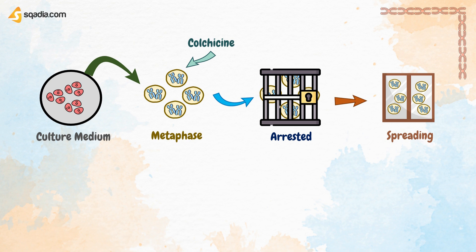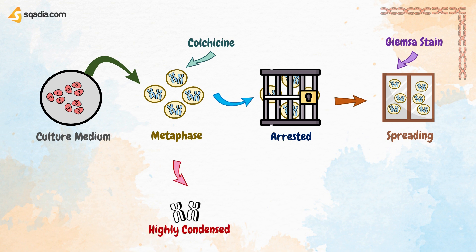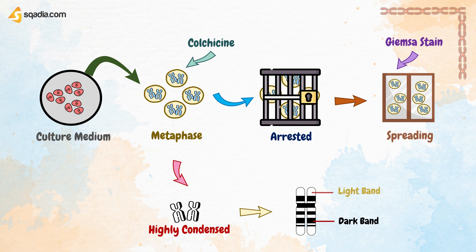Staining of these metaphasic chromosomes with Giemsa stain is then carried out. The metaphase chromosomes are stained in order to visualize them, as they are highly condensed and easily visualized. The chromosomes are stained in dark and light bands, and we can determine the karyotype of an organism by these techniques.